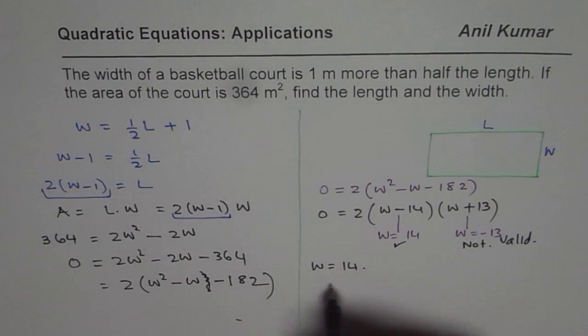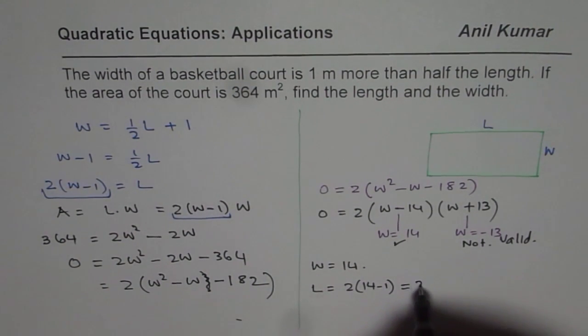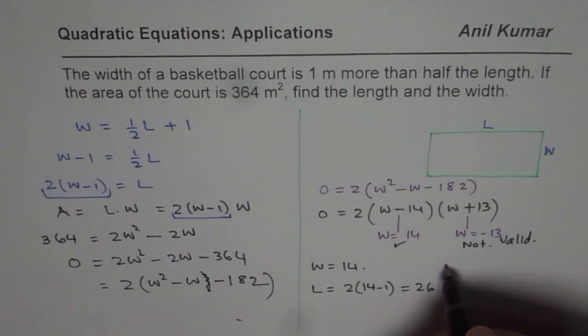Once we know the width, we can find length. So length equals 2 times (14 minus 1), which is 13 times 2, which is 26, correct?